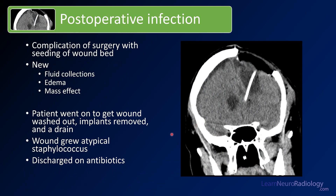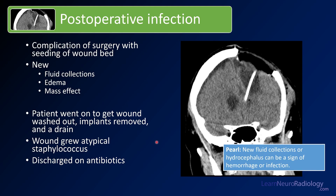These are the things you need to report on your CT: the possibility of infection and whether this person has acute hydrocephalus after surgery. You want to describe the development of new post-operative fluid collections and new mild hydrocephalus. In this case, it was a post-operative infection — they evacuated those fluid collections and placed a shunt. When they washed out the wound, they grew staphylococcus. This tells you that infection can be quite subtle. The fluid collections aren't crazy for a post-op patient, and the hydrocephalus was subtle, but the patient was symptomatic. New fluid collections or hydrocephalus can be a sign of hemorrhage or infection — pay attention to them.